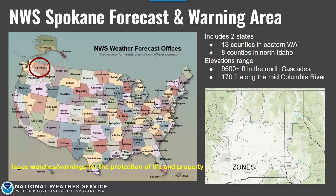Spokane's forecast area includes eastern Washington from the Cascade Crest — that includes Chelan and Okanogan counties — all the way to the Idaho-Montana border. That is 13 counties in Washington and 8 counties in Idaho, ranging in elevation from about 170 feet along the Columbia River to over 9,000 feet in the Cascades. We have zones split up not by county but by geographic area — for example, the Moses Lake area, part of the Columbia Basin, the Waterville Plateau in Douglas County, and the Okanogan Valley — split according to geographic area and weather phenomena that typically occur in those zones.